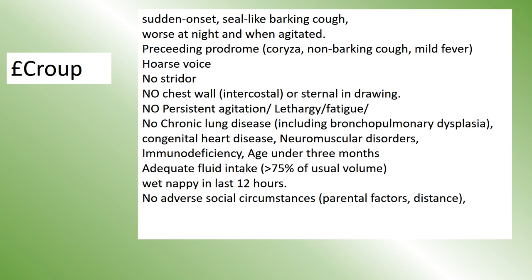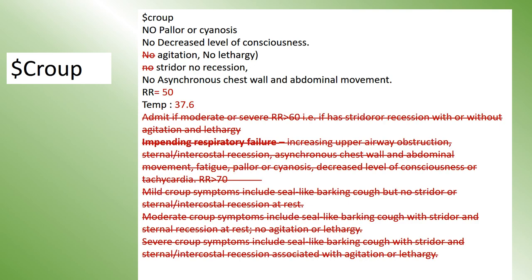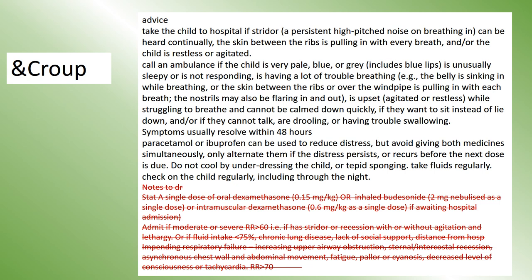In preparation for the croup season I revisited the CKS guidance on croup for my shortcut on history, with important red flags included. This is my croup examination shortcut, and you can see the bottom half has pointers to myself about which children would need admitting. Here it is filled out with those pointers deleted because they don't need to be part of the medical record. Here's my shortcut for advice and safety netting for croup, and at the end I put in for reference the treatment and criteria for admission, which I delete as they don't need to be included in the notes.